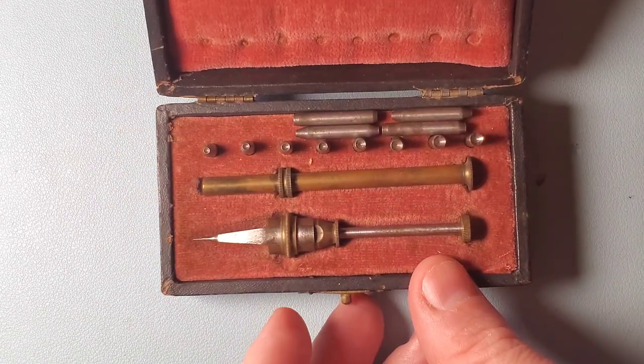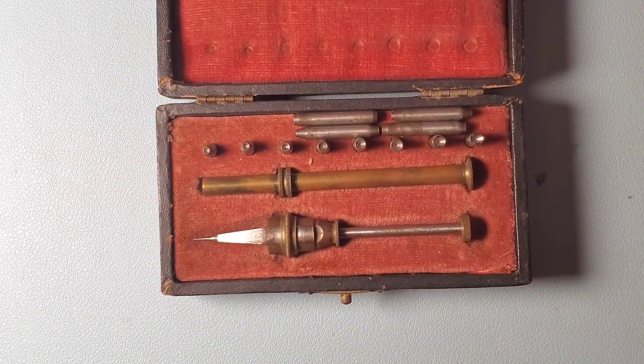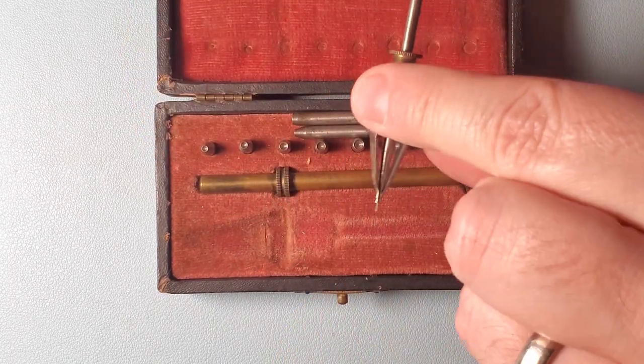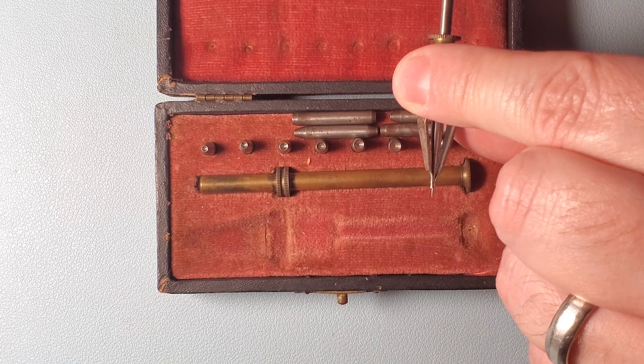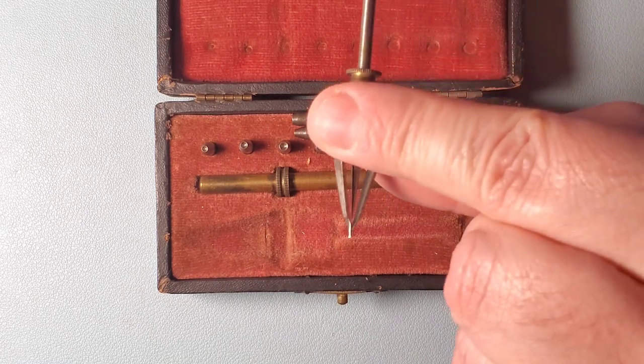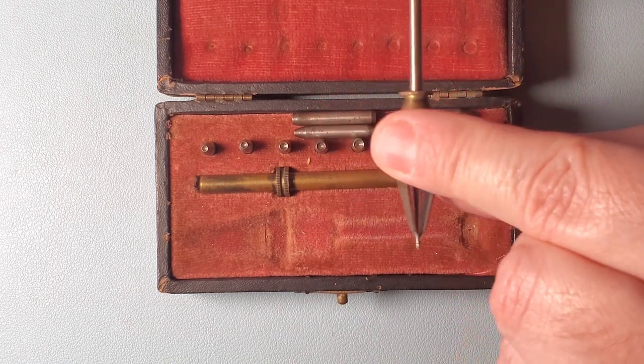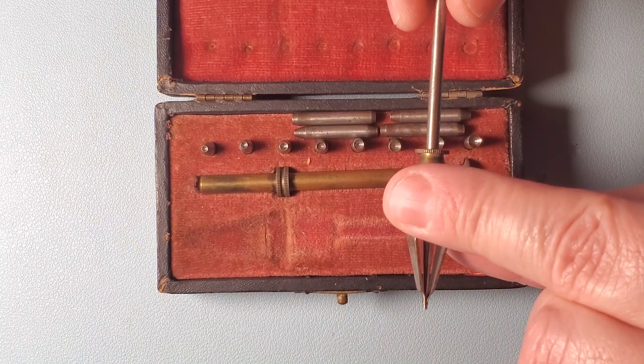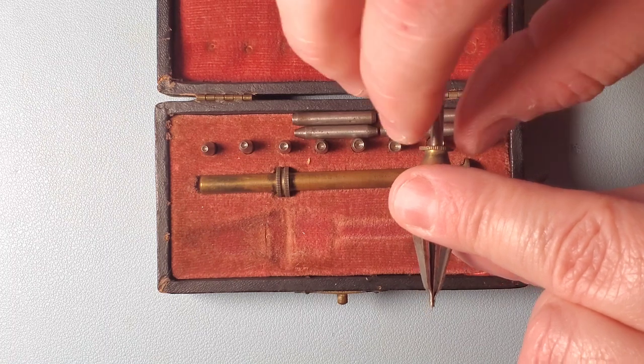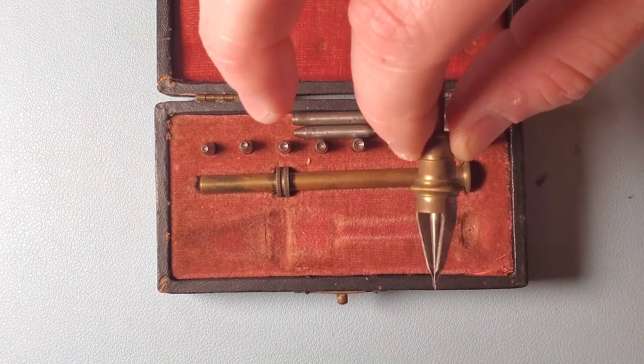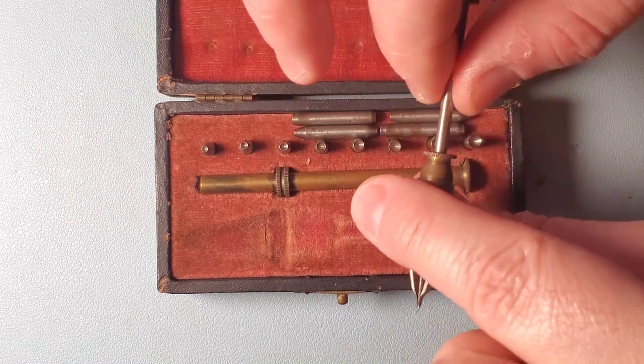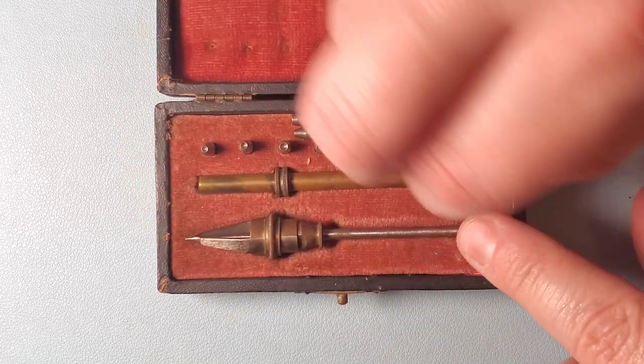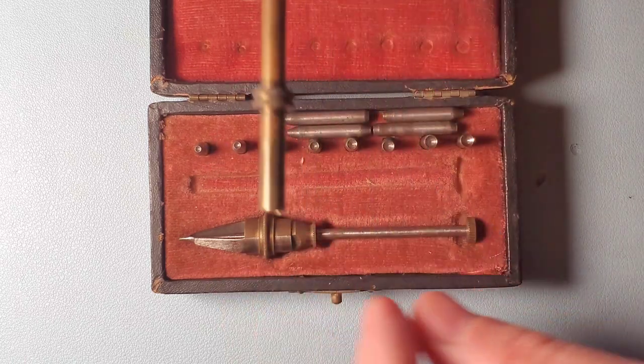The next step is to get my jeweling tools out and I want to open up the bezel in that chaton. So this first tool that I'm holding is for doing just that. It's an adjustable tool that allows me to open up that bezel to allow the new jewel to fit inside. There's another part of this set. There's also a bezel closing tool.